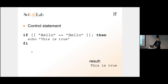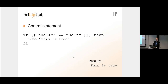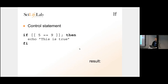You can start adding tests to if statements. You can compare text: if 'hello' is identical to 'hello' it prints out the result. 'hello' is not the same as 'hi', so that would be false. You can use wildcards in comparisons — 'hello' matches 'hell*'. You can also compare numbers: if 5 is less than 9 that's true; if 5 is greater than 9 that's false.